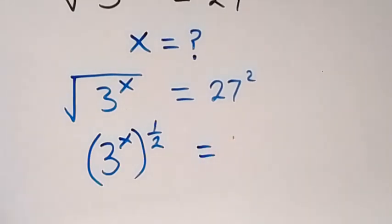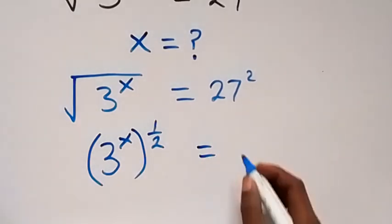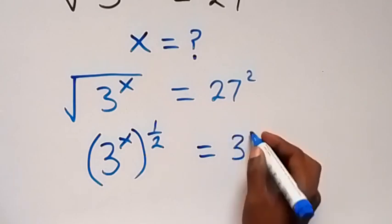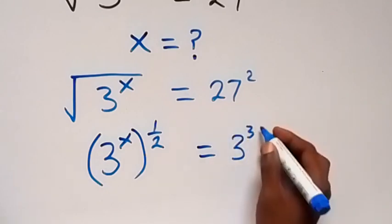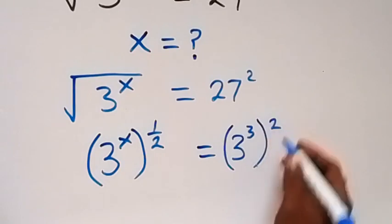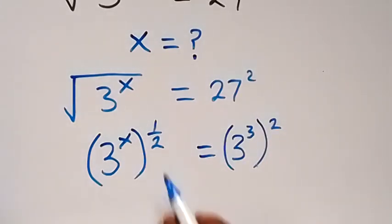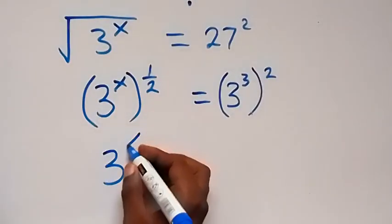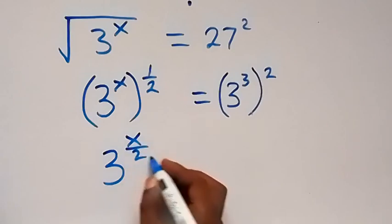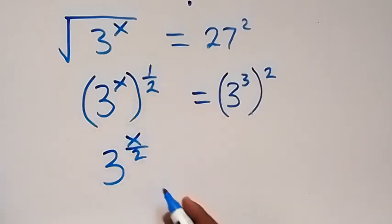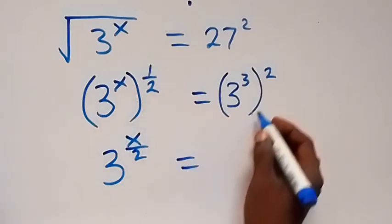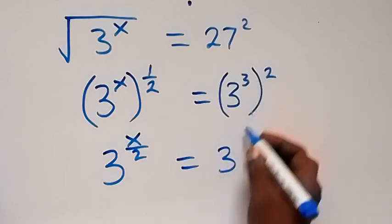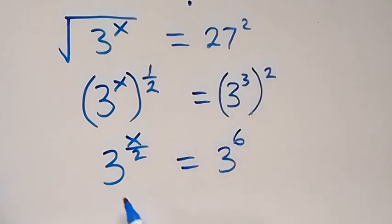We can also rewrite 27 as 3 raised to power 3. So we have 3 raised to power 3 — that's 27 — then raised to power 2. From here, this power multiplies, and when we write it again this will give us 3 raised to power x over 2. That's x times half, which gives us x over 2. On the right side we have 3 raised to power 2 times 3, which is 6.